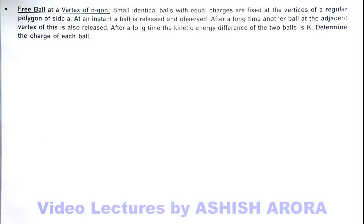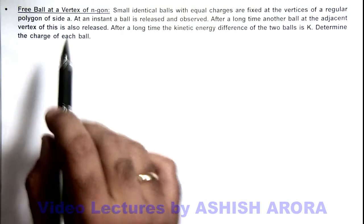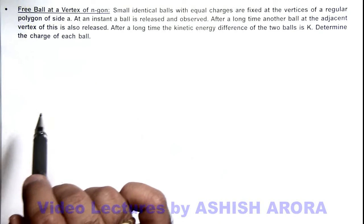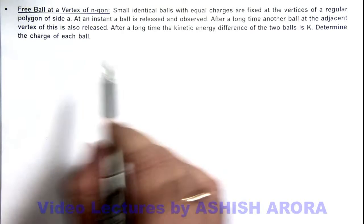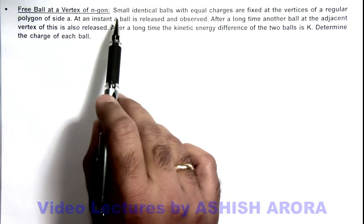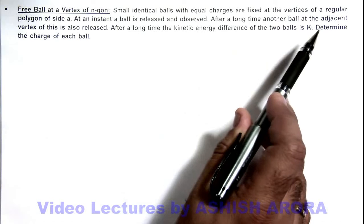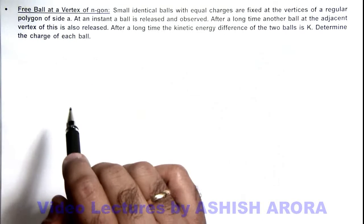Dear students, let's analyze another illustration of a situation where we are going to analyze a free ball at the vertex of n-gon. Here the situation is described as small identical balls with equal charges are fixed at the vertices of a regular polygon of side a.